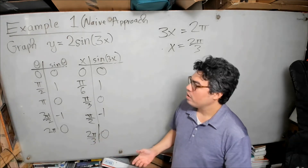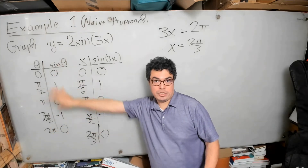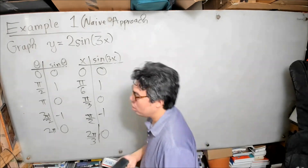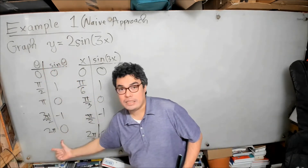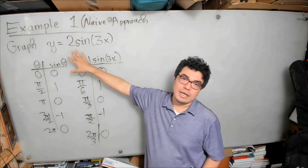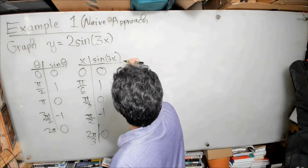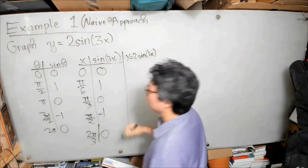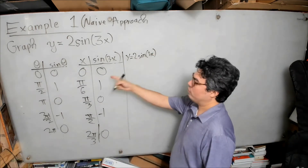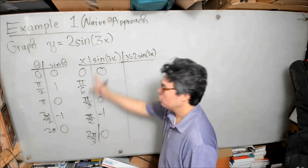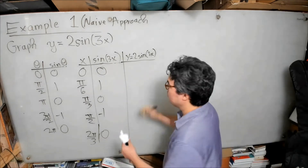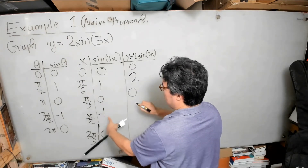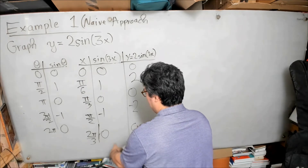We've used our knowledge of the parent function sine theta to build a table for sine of 3x. Now our function is 2·sine(3x), so the only difference is we multiply all the y-values by 2. The x-values stay the same. So: 0×2=0, 1×2=2, 0×2=0, −1×2=−2, and 0×2=0.